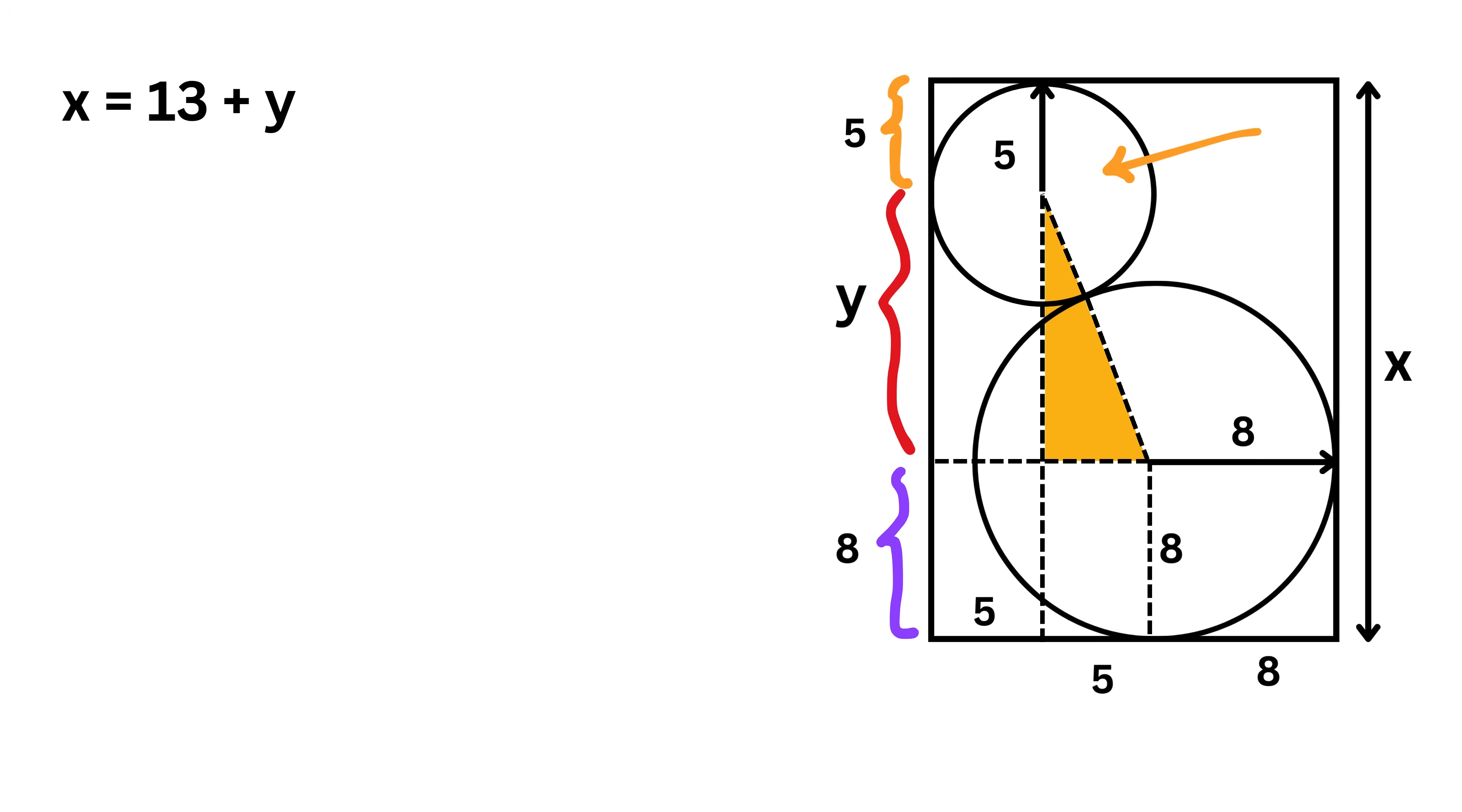Now consider this right triangle. This is Y, this is 5, and the hypotenuse is 5 plus 8 or 13 units. Thus 5 square plus Y square equals 13 square or Y equals square root of 169 minus 25 or 144. This gives Y as 12 and thus X equals 13 plus 12 or 25 units.